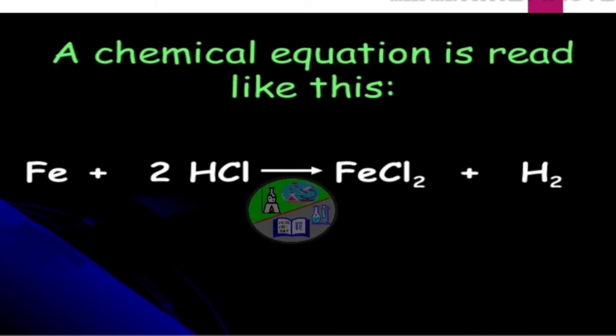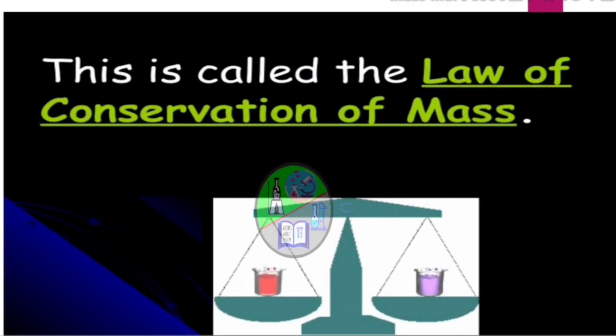During a chemical reaction, atoms can't be created or destroyed. So, the number of atoms at the beginning of a reaction must be equal to the number of atoms at the end of the reaction. And this is called the law of conservation of mass.